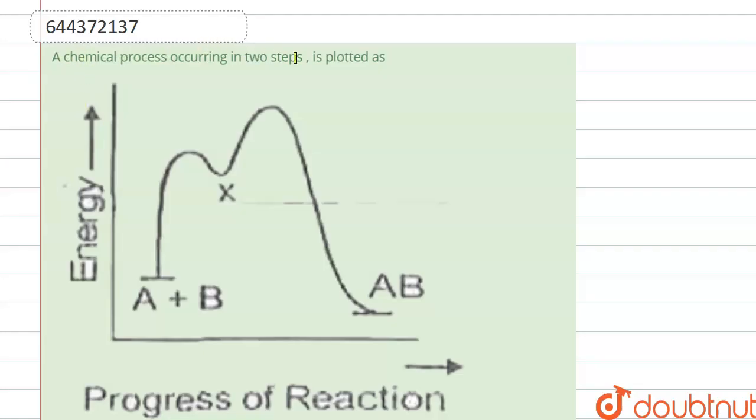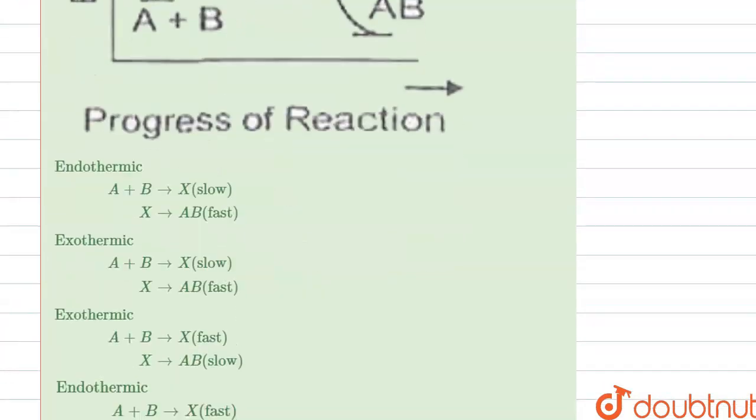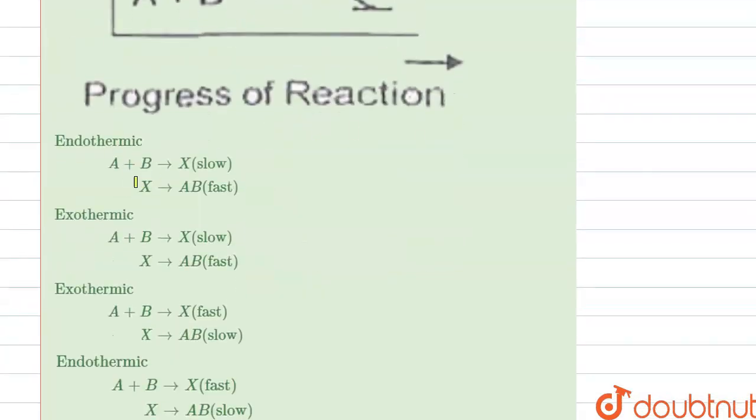Hello everyone, here the question is: a chemical process occurring in two steps is plotted. So here a graph is given which is energy versus progress of reaction. We have to find from the given options whether it is endothermic or exothermic, and whether A plus B to X is slow or X to AB is fast.